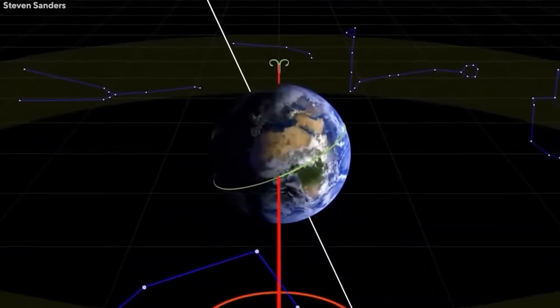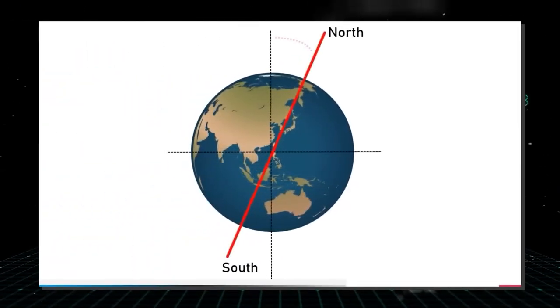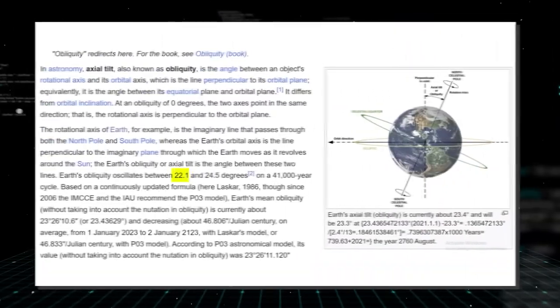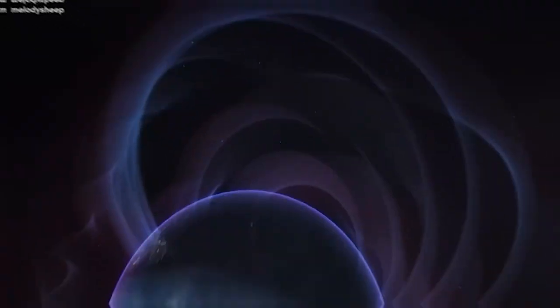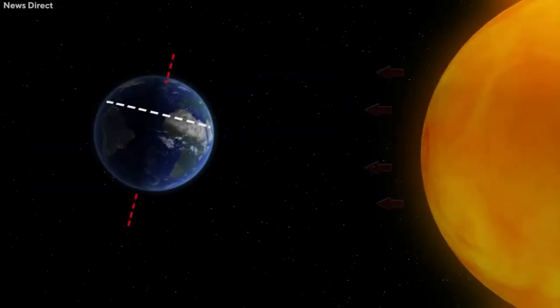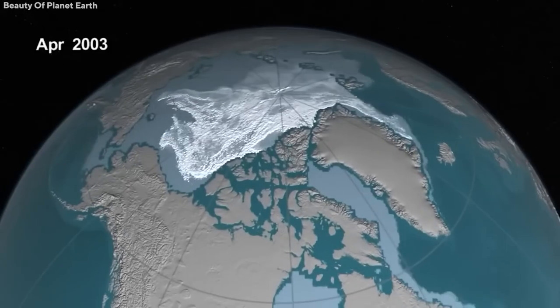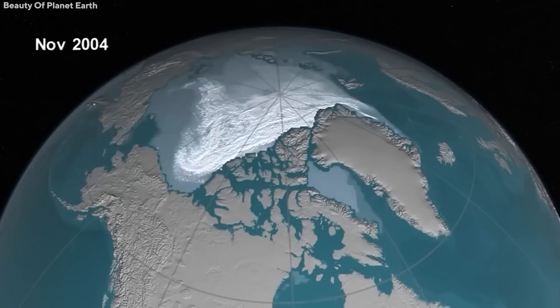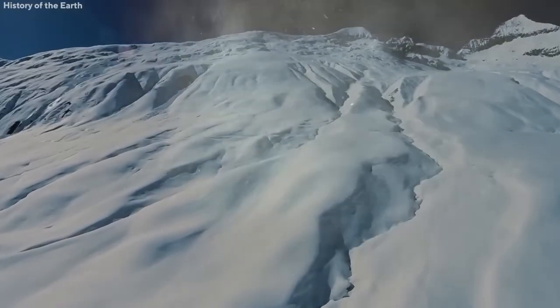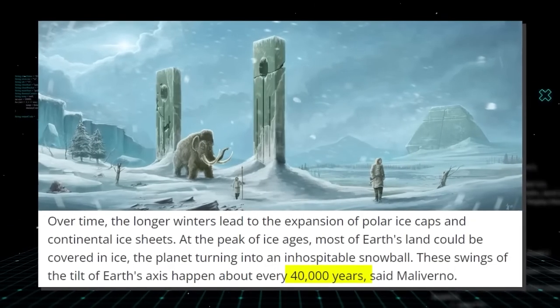Then there are changes to the tilt of Earth's axis. The tilt currently deviates by 23.4 degrees from a 90-degree angle toward the orbital plane, but this obliquity varies over time — it has shifted from 22.1 degrees to 24.5 degrees over the last million years. Seasons become more extreme during more tilted periods, as each hemisphere receives more sunlight in summer and less in winter. Longer winters cause polar ice caps and continental ice sheets to expand over time. During ice ages, most of Earth's land could be covered in ice. These swings in the tilt of Earth's axis occur every 40,000 years.